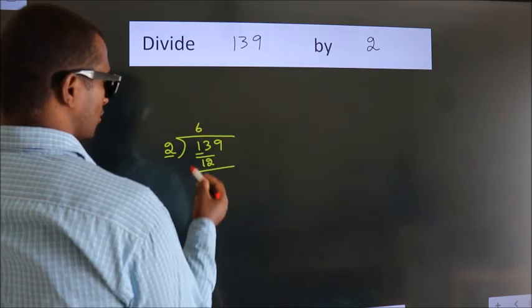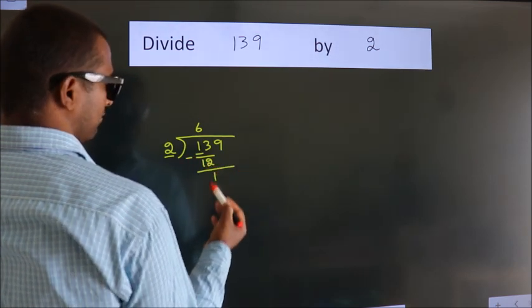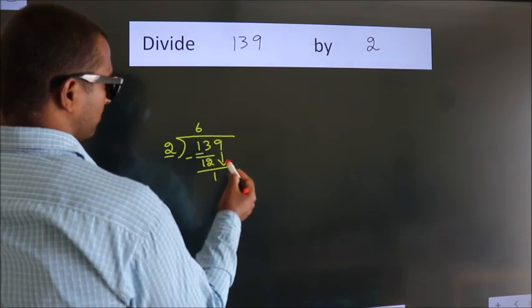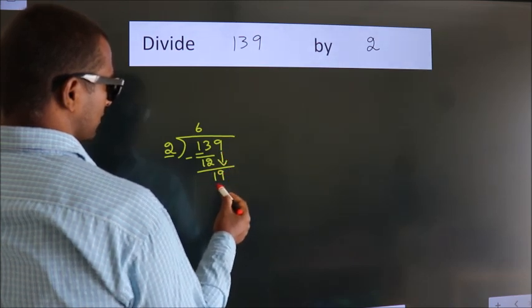Now we should subtract. We get 1. After this, bring down the beside number. So 9 down. So 19.